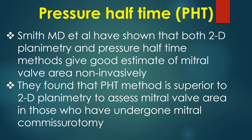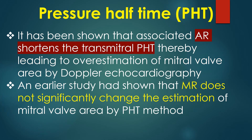Smith and colleagues have shown that both two-dimensional planimetry and pressure half-time methods give a good non-invasive estimate of mitral valve area. They found that the pressure half-time method is superior to two-dimensional planimetry in those who have undergone mitral commissurotomy. It has been shown that associated aortic regurgitation shortens the transmitral pressure half-time, thereby leading to overestimation of mitral valve area by Doppler echocardiography. An earlier study showed that mitral regurgitation does not significantly change the estimation of mitral valve area by the pressure half-time method.